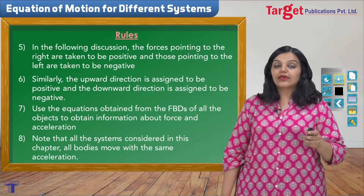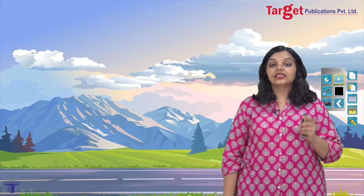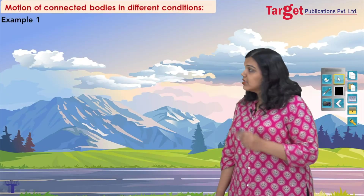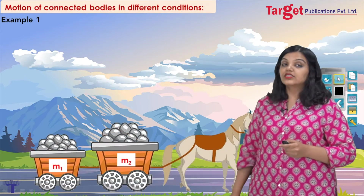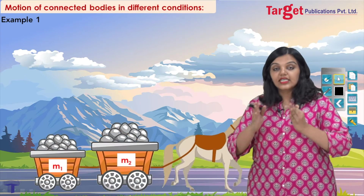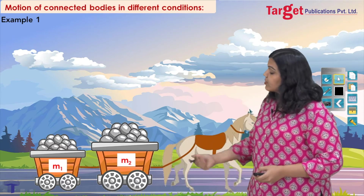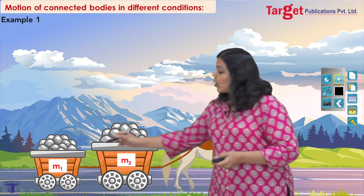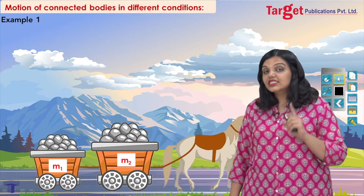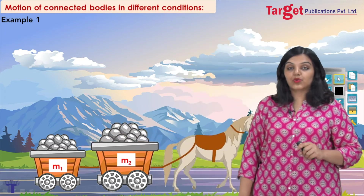Now that we have revised the rules, let's move on and look at the first example under this module. This module is different because I again have two bodies which are connected. But remember, in the previous module there were blocks in direct contact. This is different because here I have two bodies — one of mass m1 and one of mass m2 — but now they are not in direct contact; they are connected by a massless string between them.